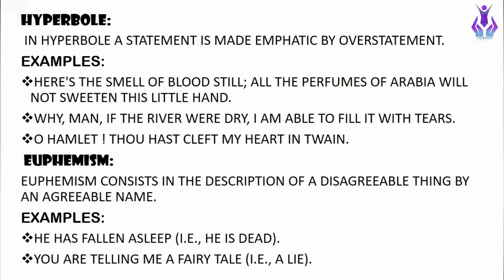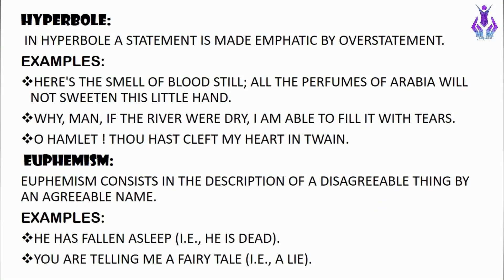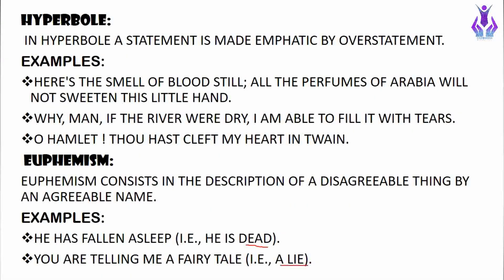The next is euphemism. Euphemism consists in the description of a disagreeable thing by an agreeable name. In simple words, euphemism is when we avoid using offensive or harsh words. For example, 'He has fallen asleep' means someone has died — instead of using the harsh word 'dead,' we say 'he has fallen asleep.' Similarly, 'You are telling me a fairy tale' means 'you are telling me a lie,' avoiding the harsh word.